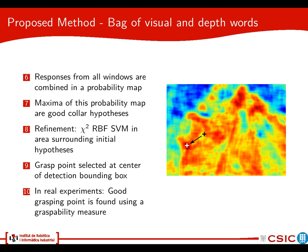We also perform real grasp experiments with a robot hand. In order to make sure that the point selected will be graspable by the robotic hand, we use a graspability measure that is based on the wrinkledness of the clothes or of the object.